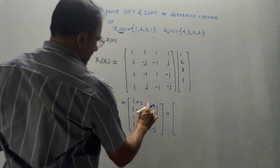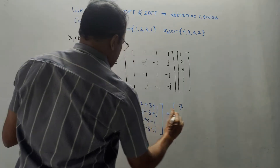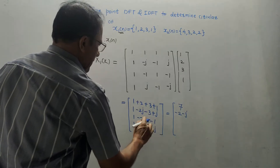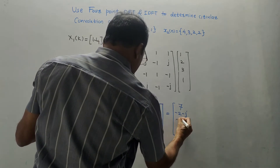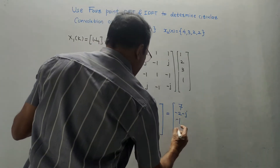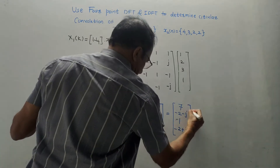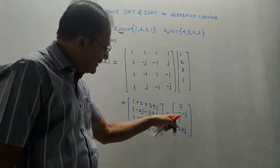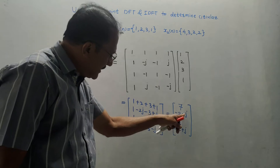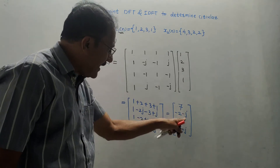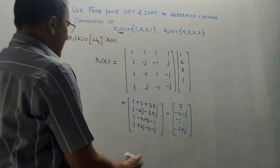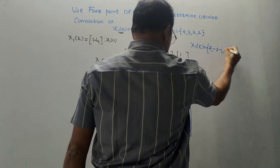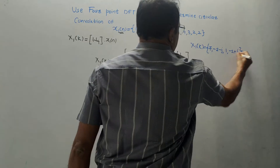Simplifying the calculations: the first answer is 7. The second answer is −2−j, because −2j + j = −j combined with the −2 term. The third answer is 1. The fourth answer is −2+j. As a cross-check, complex terms must appear as conjugate pairs — here −2−j and −2+j. So X1(K) = {7, −2−j, 1, −2+j}.